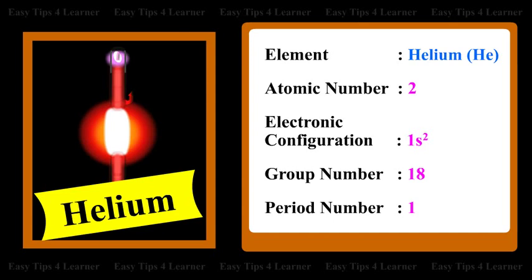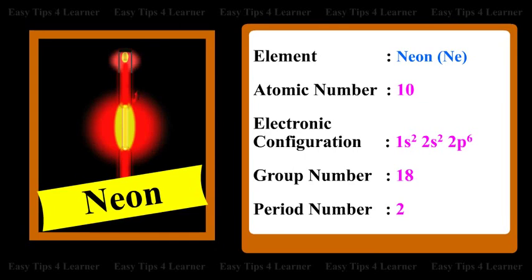For the element helium, the atomic number is 2, the electronic configuration is 1s², the group number is 18, and the period number is 1. For the element neon, the atomic number is 10, the electronic configuration is 1s² 2s² 2p⁶, the group number is 18, and the period number is 2.